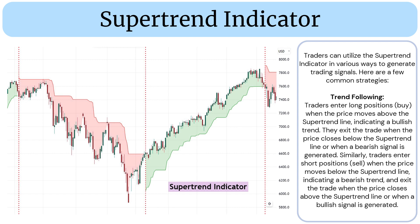Traders can utilize the supertrend indicator in various ways to generate trading signals. For trend following, traders enter long positions when the price moves above the supertrend line, indicating a bullish trend, and exit when the price closes below the supertrend line or when a bearish signal is generated. Similarly, traders enter short positions when the price moves below the supertrend line, indicating a bearish trend, and exit when the price closes above the line or a bullish signal is generated.